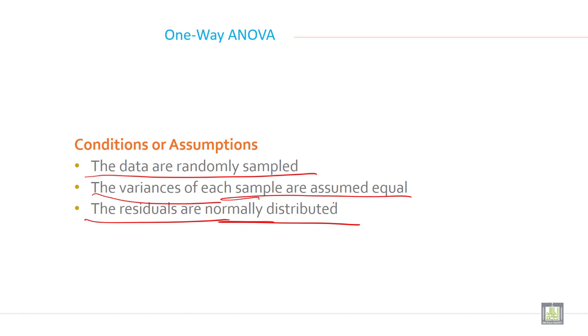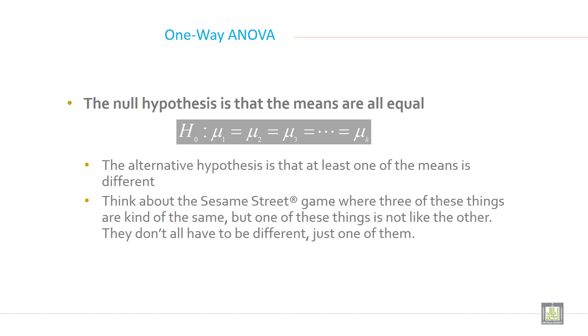If these three assumptions you have, then you can apply analysis of variance. The null hypothesis is that the means are all equal. The null hypothesis, mu1 is equal to mu2 is equal to mu3 is equal to mu k, for example.